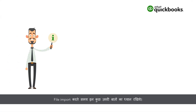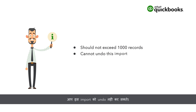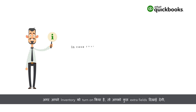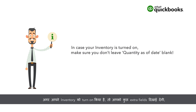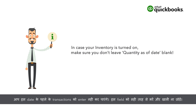Here are some important points to keep in mind while importing a file. The list should not exceed 1000 records — if it does, split your list into two or more files. You cannot undo this import. The product or service name should not exceed 100 characters and cannot have special characters. If you have turned on inventory, you will have extra fields like quantity on hand and quantity as of date. Make sure you don't leave quantity as of date empty, because QuickBooks will assume the inventory quantities are as of the current date, and you will not be able to enter transactions before this date.